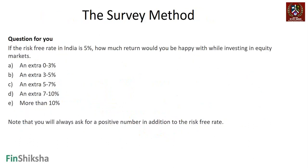Let's understand the survey method first. If the risk-free rate in India is 5%, how much return would you be happy with while investing in the equity markets? Would you be happy with an extra 0–3%, 3–5%, 5–7%, 7–10%, or more than 10%? Note that there is no negative number here — you will never accept a return less than the risk-free rate. It's always going to be positive.